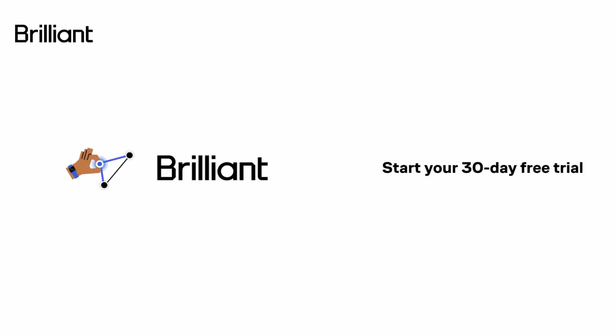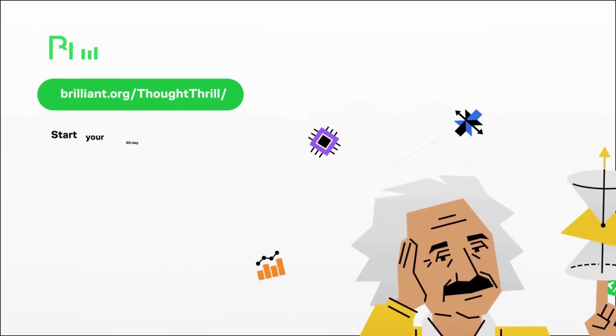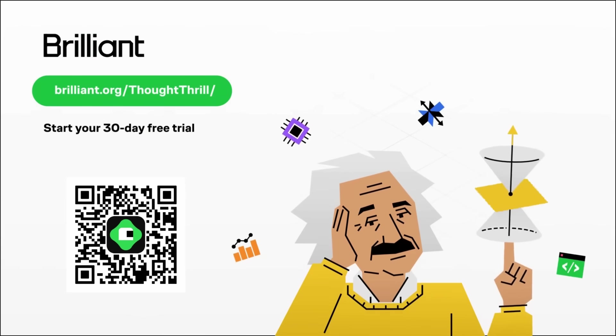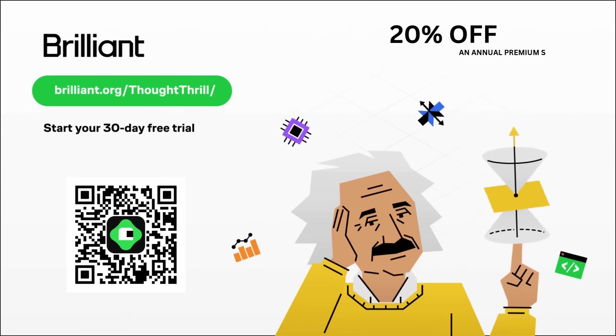To try everything Brilliant has to offer for free for a full 30 days, visit brilliant.org slash thoughtthrill, or click on the link in the description. You'll also get 20% off an annual premium subscription.